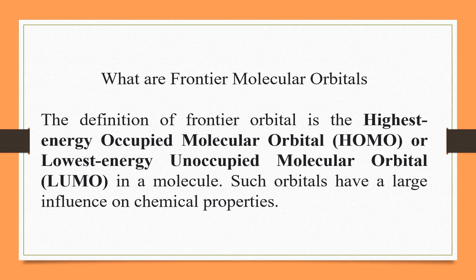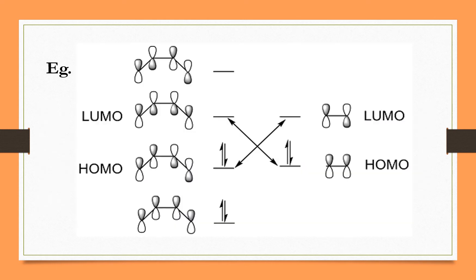Frontier orbitals have a large influence on the chemical properties of molecules. For example, consider the reaction between 1,3-butadiene and ethylene.